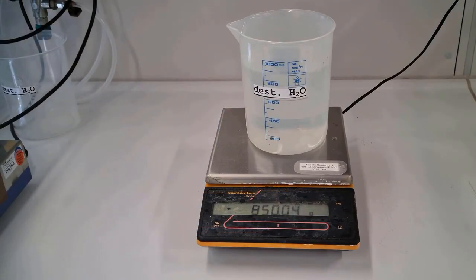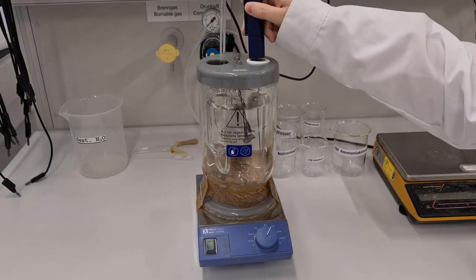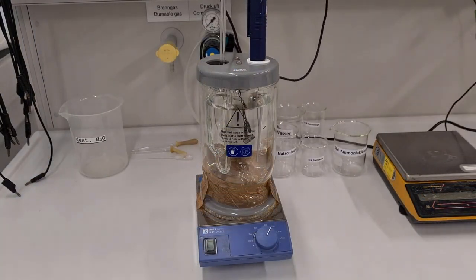850 grams of water are transferred into the dual flask. The pipette and temperature probe are immersed into the water through the calorimeter lid.